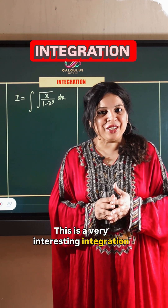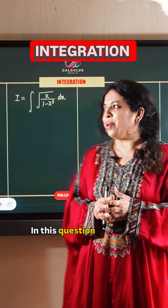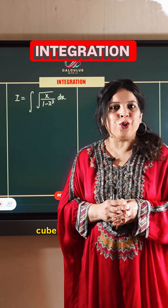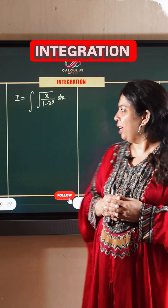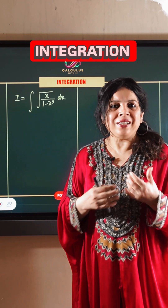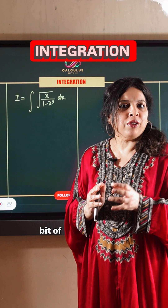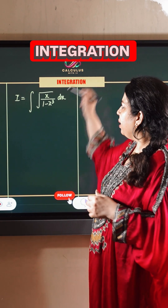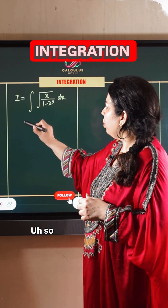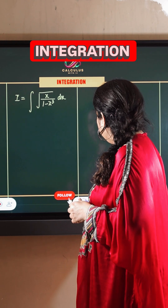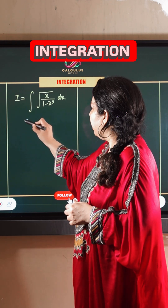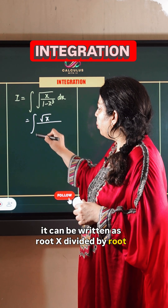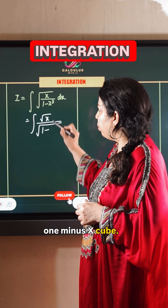This is a very interesting integration question. In this question we have x divided by 1 minus x cube, whole under the root. This requires a little bit of trick and quick thinking and observation. So what I am going to do is it can be written as root x divided by root 1 minus x cube.